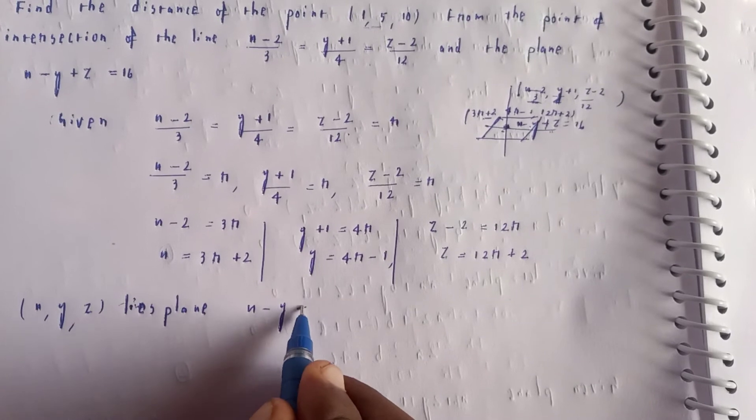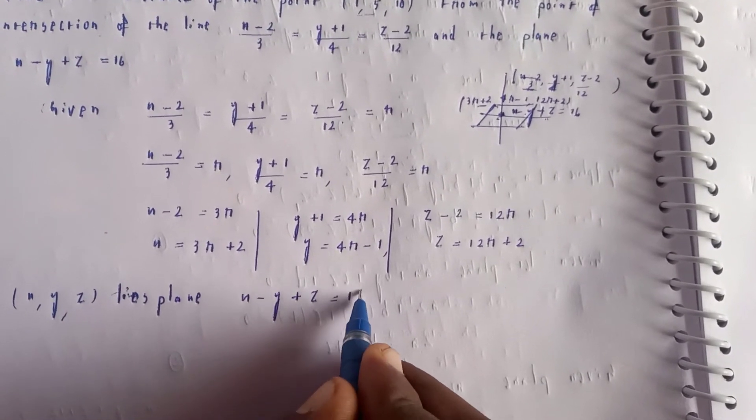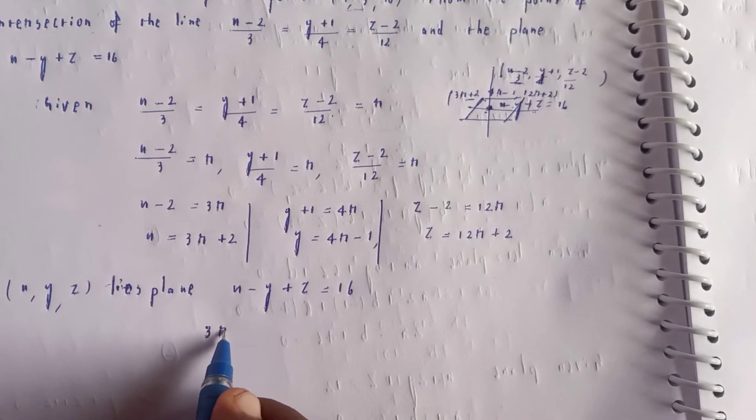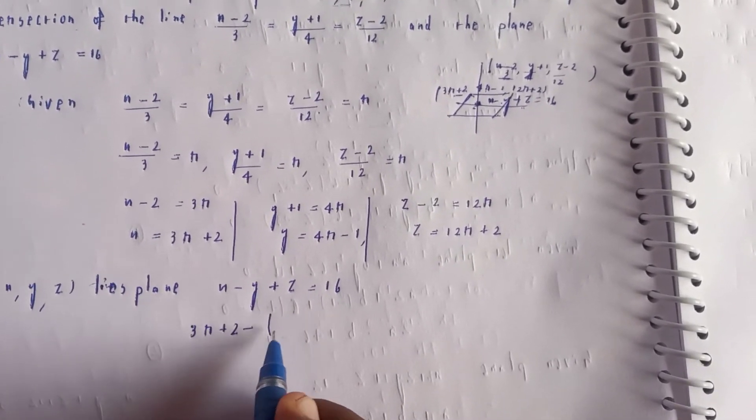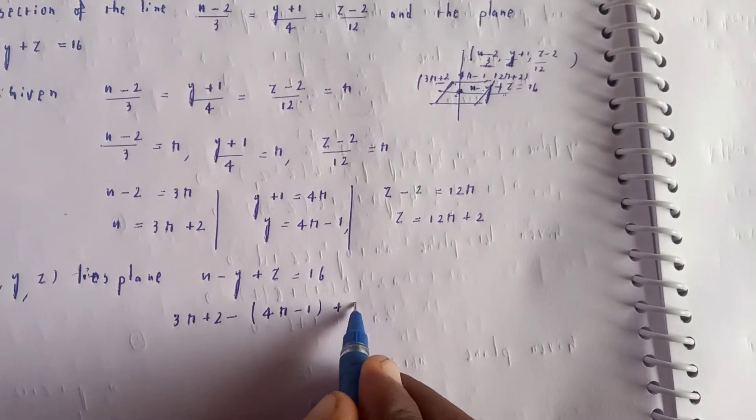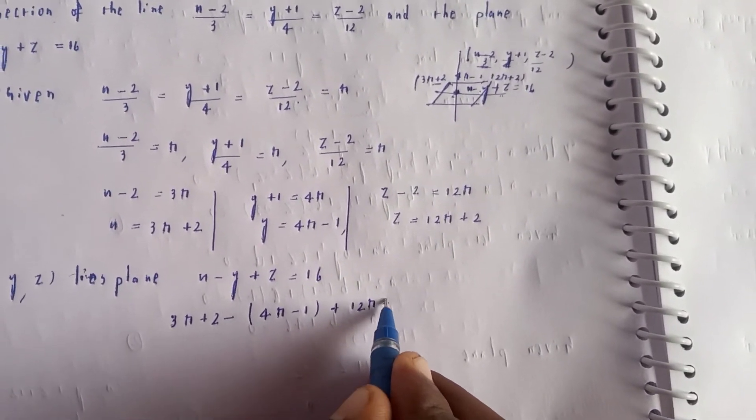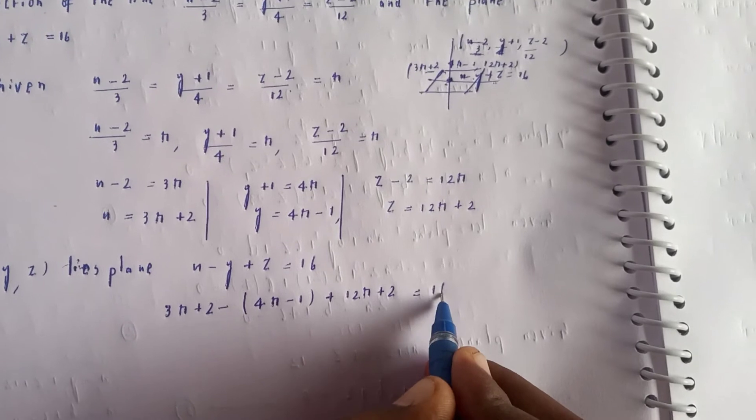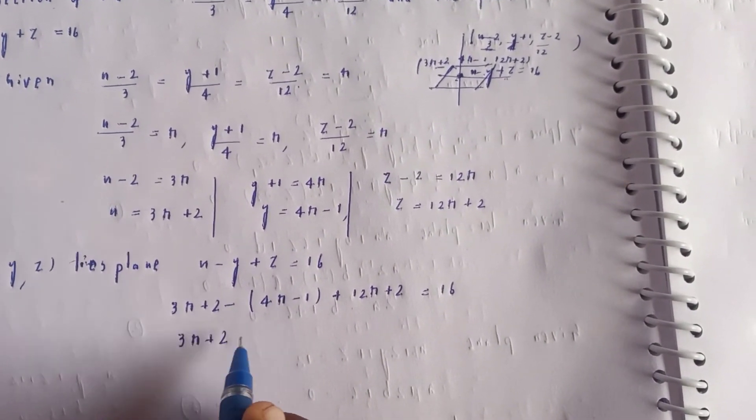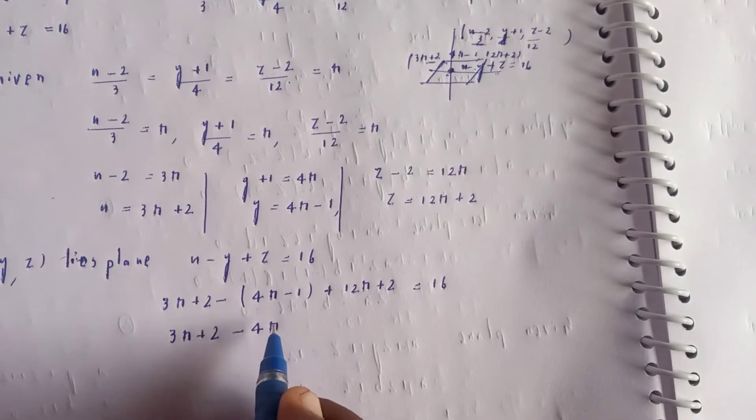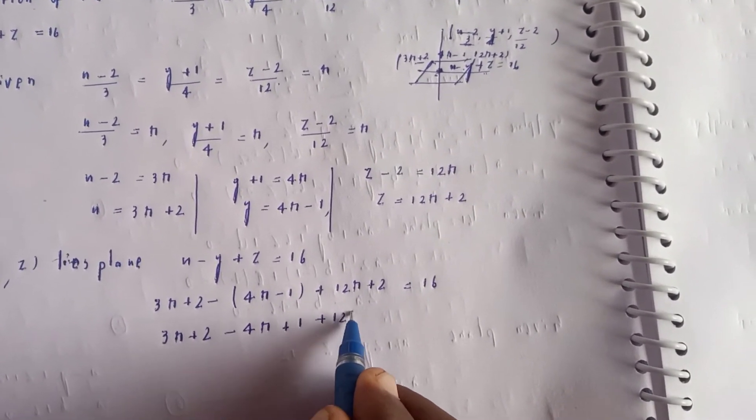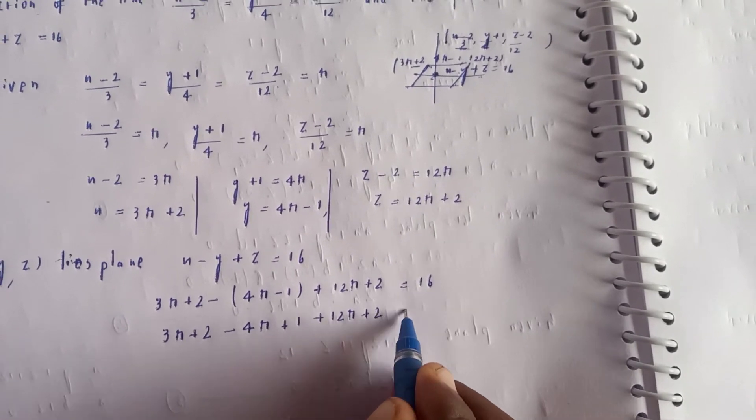Substituting into x - y + z = 16, we get (3r+2) - (4r-1) + (12r+2) = 16. This becomes 3r+2 - 4r+1 + 12r+2 = 16.